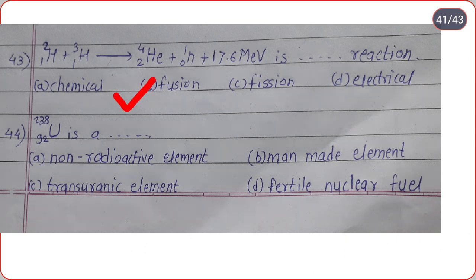Uranium-92-238 is a dot-dot. Options are non-radioactive element, man-made element, transuranic element, fertile nuclear fuel. Correct option is option D, fertile nuclear fuel.